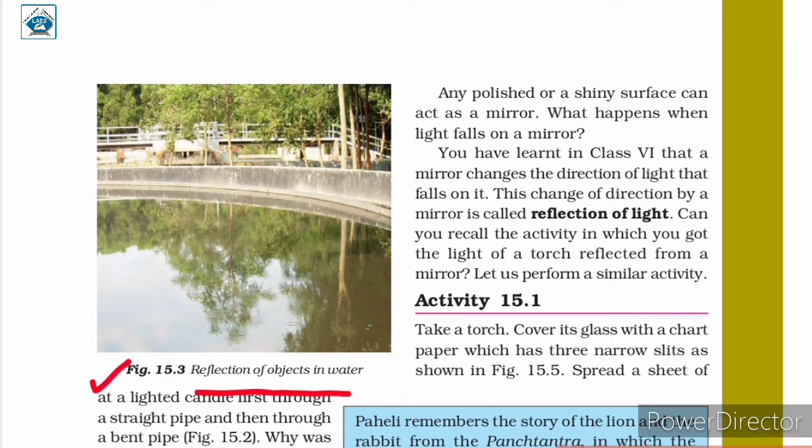A stainless steel plate or a shining stainless steel spoon can change the direction of light. Similarly, reflection can be seen on the surface of water, because the surface of water acts like a mirror and can change the path of light.